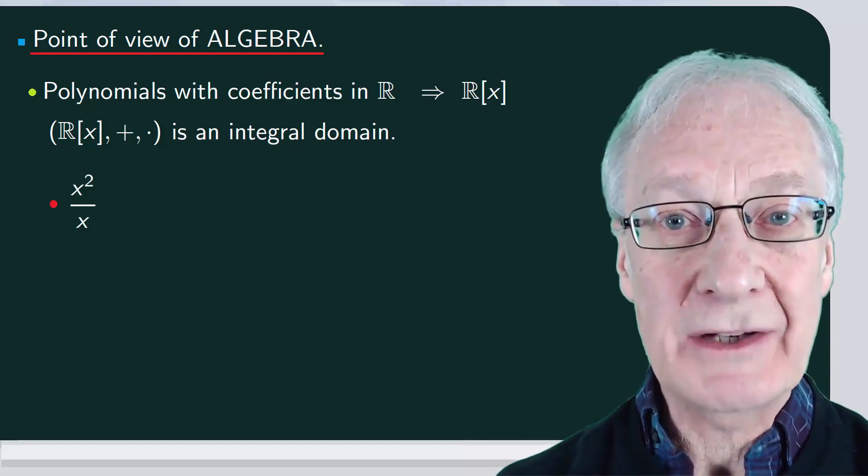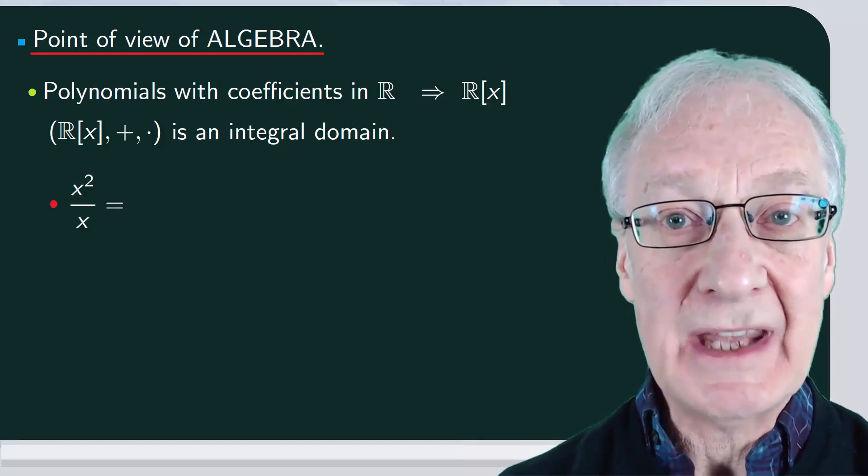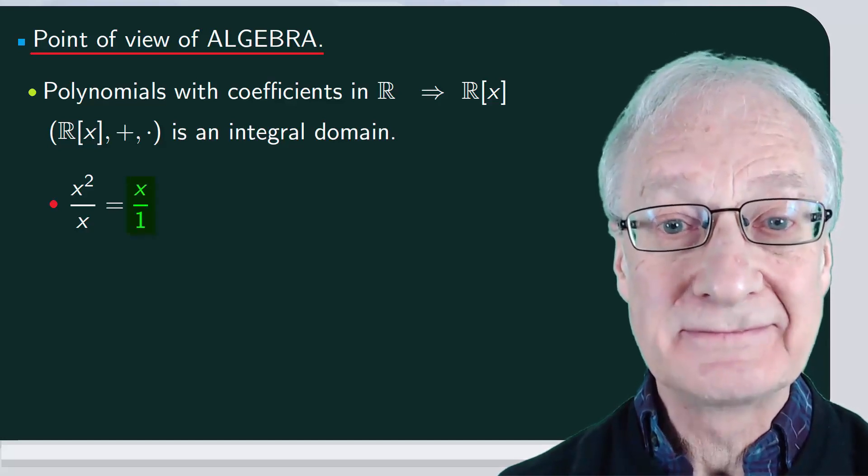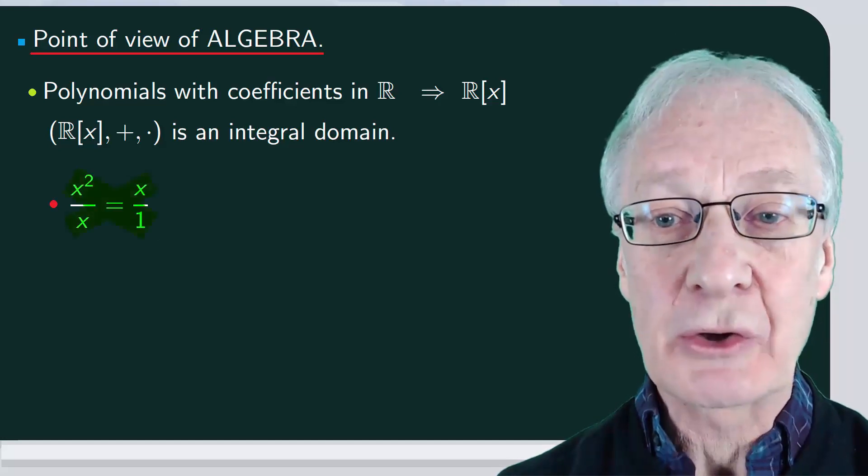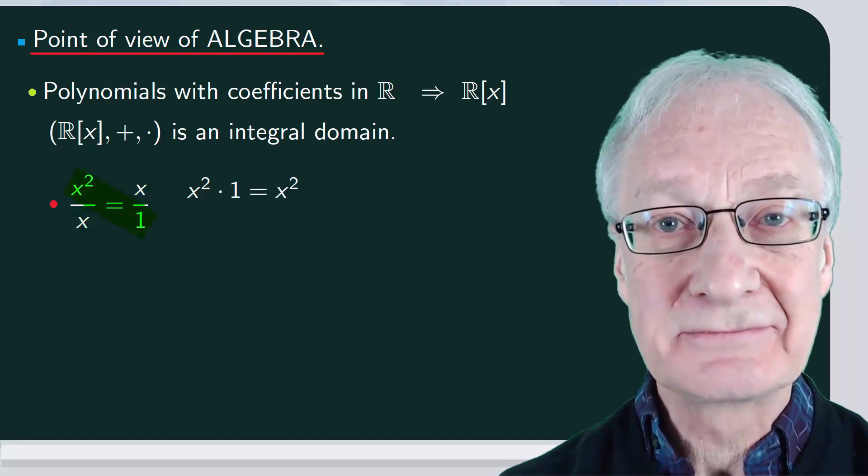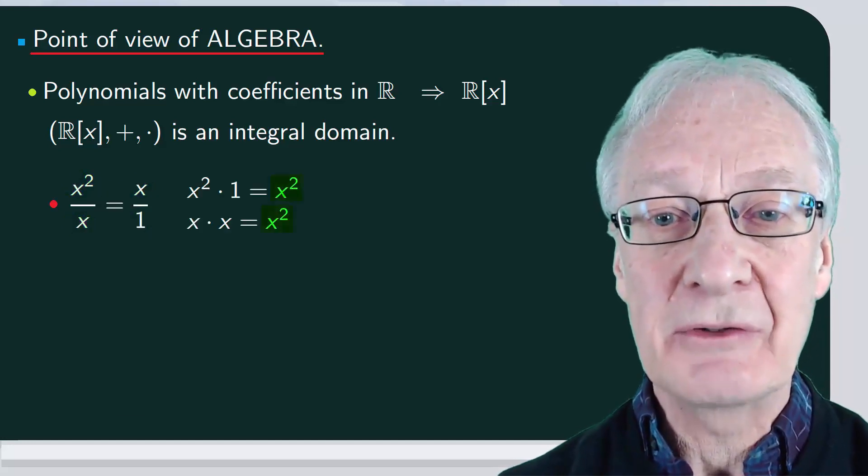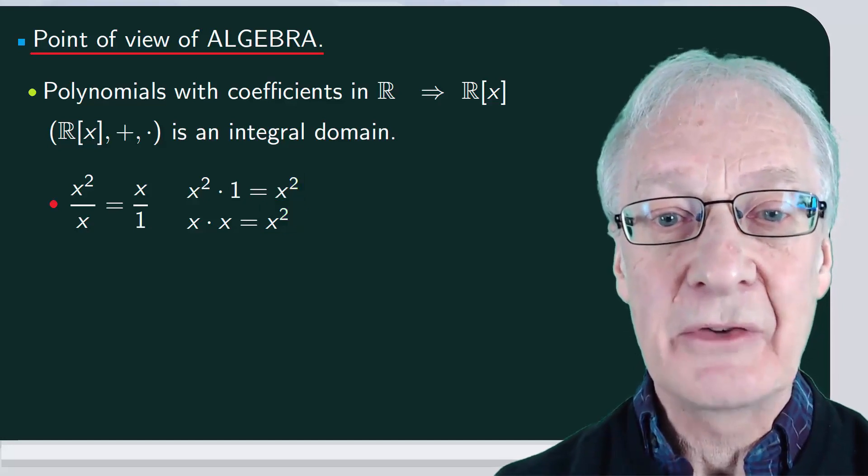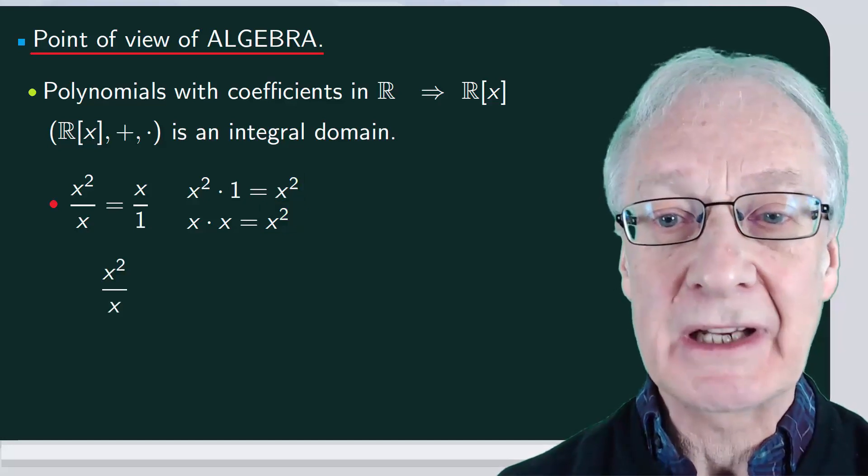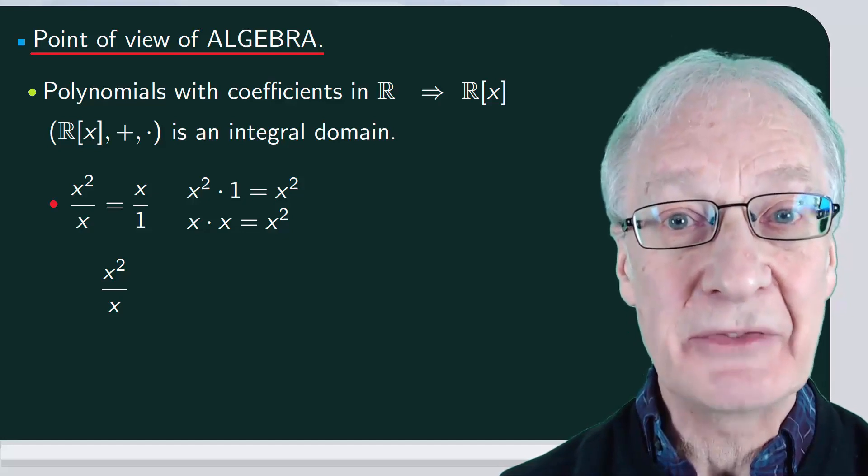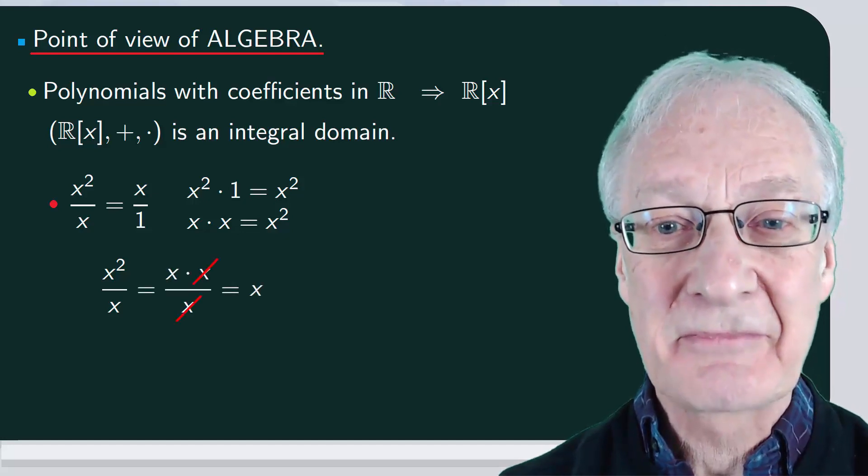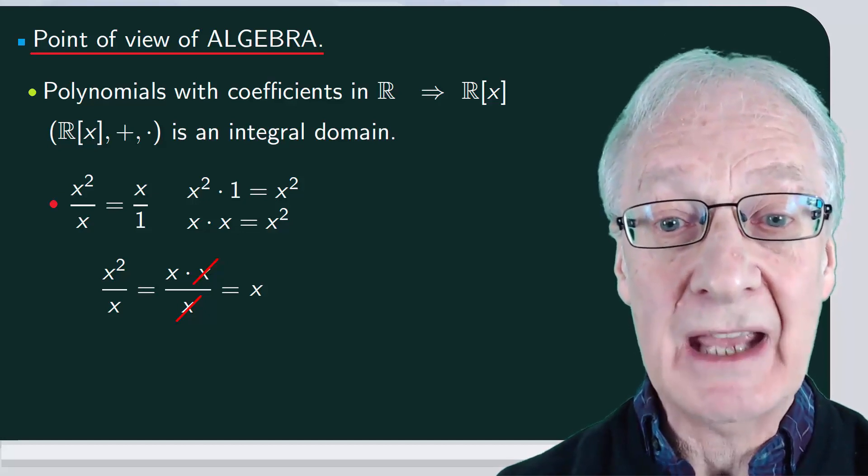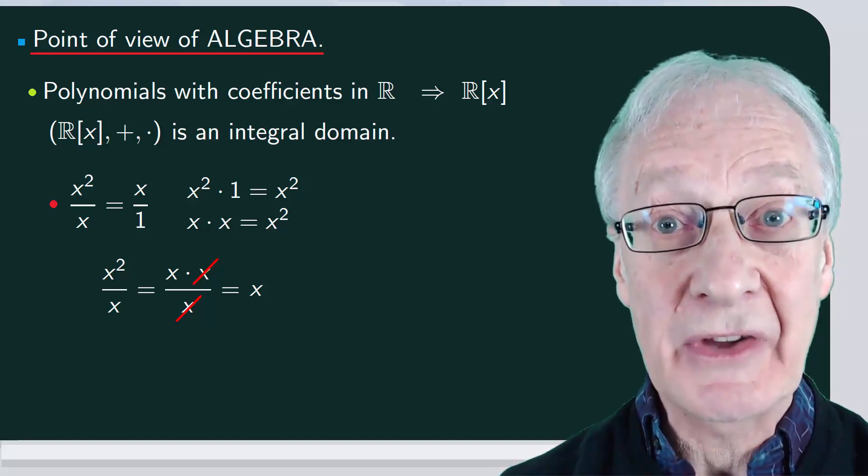In our case, x squared over x is the same as x, which is x over 1. Because when we cross multiply, we get the same result, x squared. For this, when we work with algebraic fractions, we can simplify. So, from the point of view of algebra, x squared over x and x are the same.